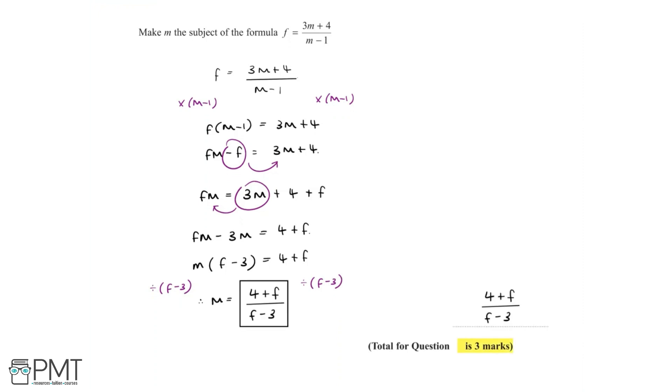This question is worth three marks. We get the first mark for initially multiplying both sides by m minus 1. We get the second mark for rearranging and isolating the m terms on one side, which left us with fm minus 3m equals 4 plus f. We get the third and final mark for factorizing m out of the left hand side, finding that m is equal to 4 plus f over f minus 3, allowing us to achieve the full three marks.